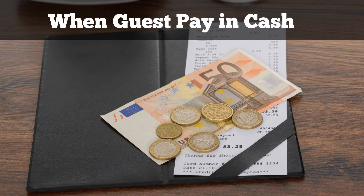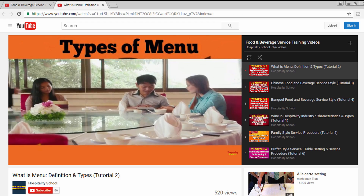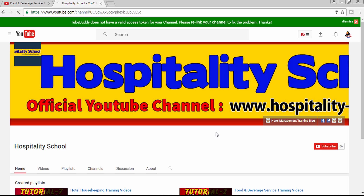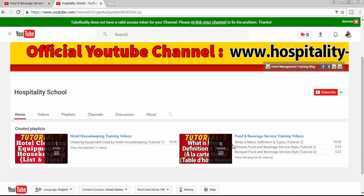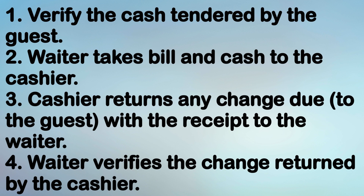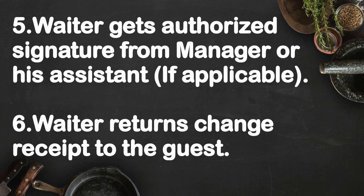When guest pays in cash: verify the cash tendered by the guest. Waiter takes bill and cash to the cashier. Cashier returns any change to the guest with the receipt to the waiter. Waiter verifies the change returned by the cashier. Waiter gets authorized signature from manager or his assistant, if applicable. Waiter returns change and receipt to the guest.